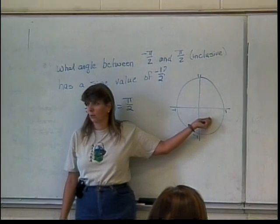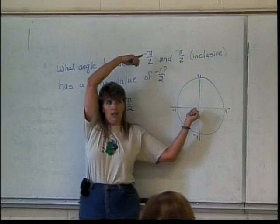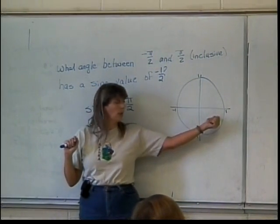Quadrant 4. Quadrant 4, where else? 3. So quadrants 3 and 4. Can I use quadrant 3? Does it fit into this between negative pi over 2 and pi over 2? No. So I've got to use quadrant 4.